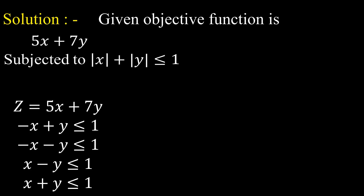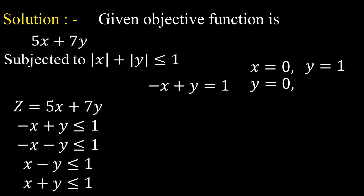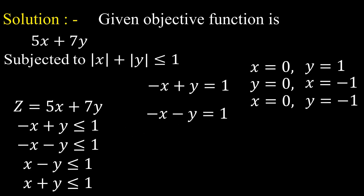Now we will solve these constraints by treating them as equations. The first equation from the first constraint is −x + y = 1. Taking x = 0 gives y = 1; taking y = 0 gives x = −1. The second equation from the second constraint is −x − y = 1. Taking x = 0 gives y = −1; taking y = 0 gives x = −1.